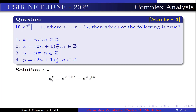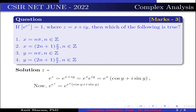Now, e to the power z can be written as e to the power (x + i·y), which is further written as e^x · e^(i·y), which is further written as e^x · (cos y + i·sin y). So, e to the power e to the power z is equal to e to the power [e^x · (cos y + i·sin y)], which is further written as e^(e^x · cos y) · e^(i · e^x · sin y).